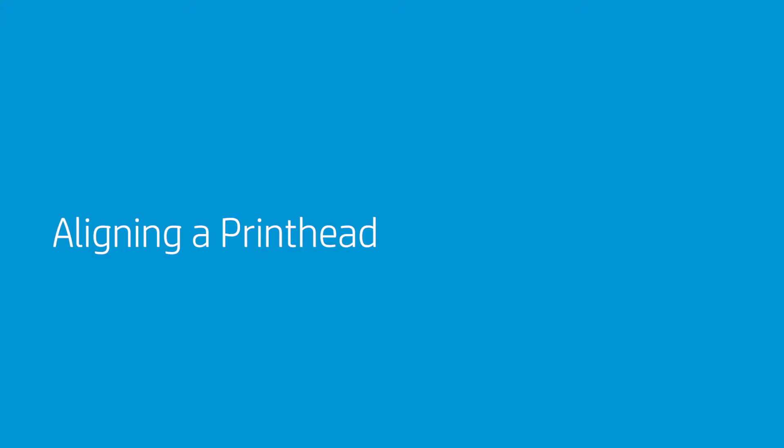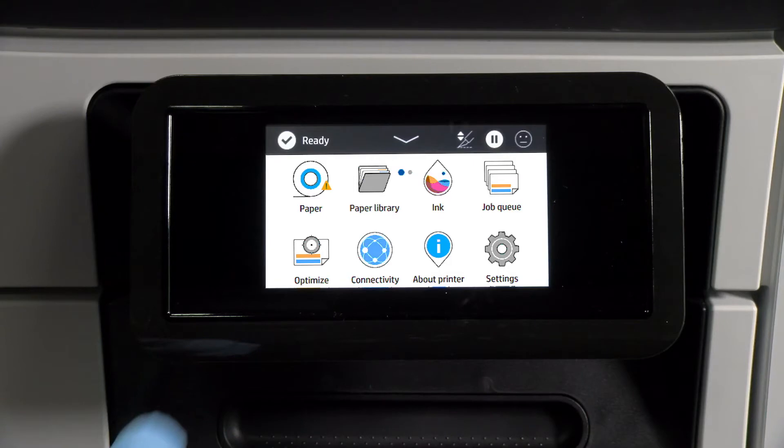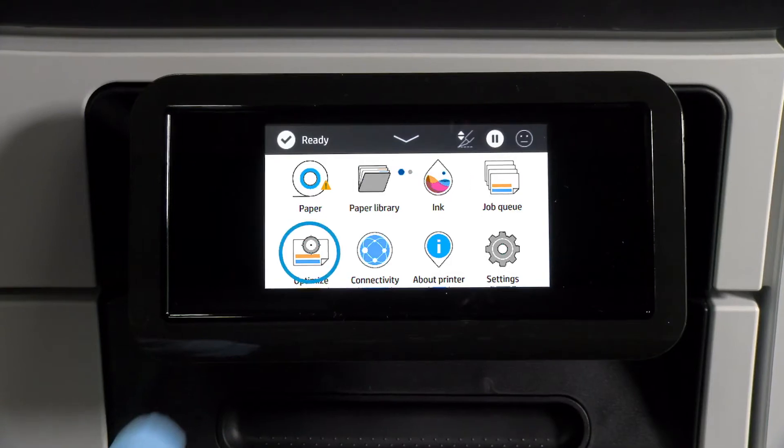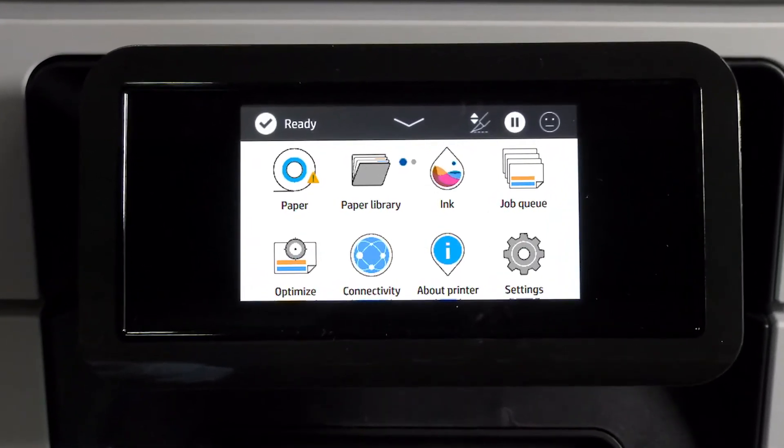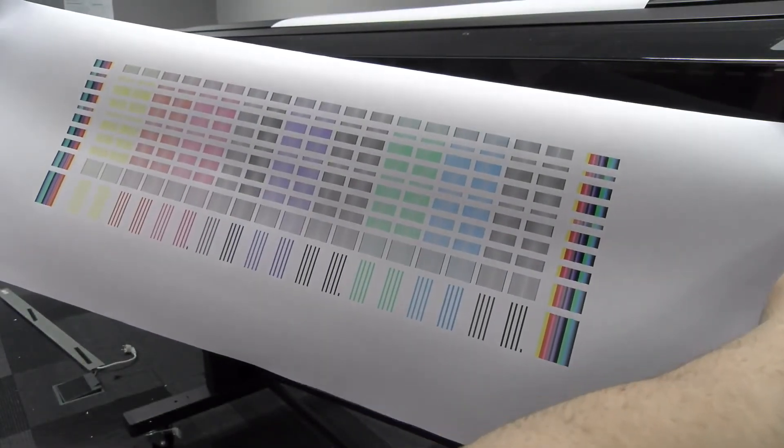Aligning a printhead: to manually request a printhead alignment, select the option from the front panel, then tap OK. The automatic printhead alignment workflow window will appear. Tap OK. This is the image the printer prints to align the printhead you replaced.